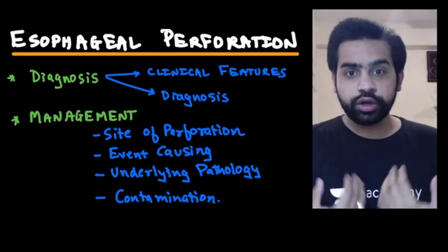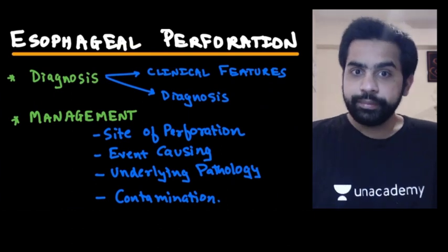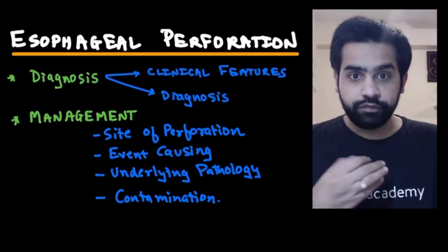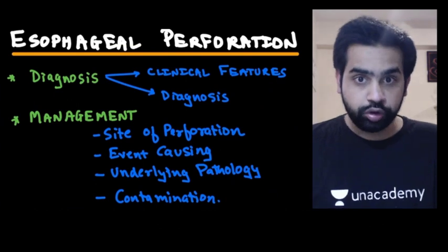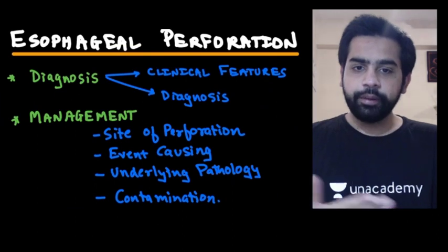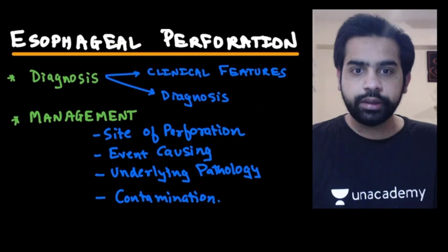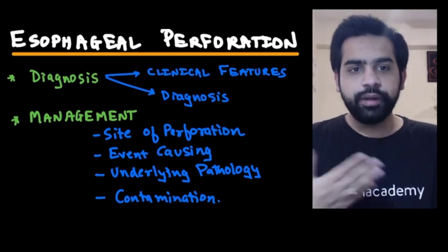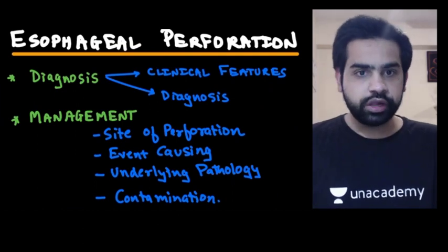A key point: therapeutic upper GI endoscopy carries a much higher chance of esophageal perforation compared to diagnostic endoscopy. Overall, the most common cause is iatrogenic — that is, upper GI endoscopy. Sometimes perforation may occur spontaneously, like in Boerhaave syndrome, but the most common cause is iatrogenic.